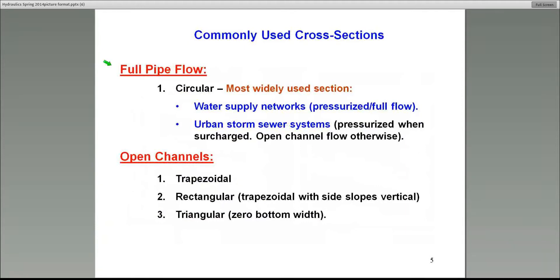First, we'll talk about full pipe flow. In this case, the most widely used cross section is a circular cross section. We'll encounter full pipe flow conditions mainly in water supply systems and in urban storm sewer systems when they get pressurized. If they're not pressurized, urban storm sewer systems behave like open channel systems. A typical cross section in open channel systems are trapezoidal, and a special case of that is a rectangular section with vertical sides. There are also triangular sections primarily used for small gutters. The main sections we'll talk about are trapezoidal and rectangular.